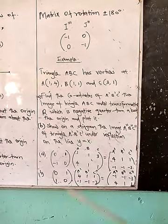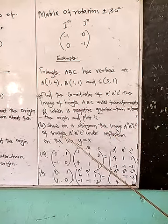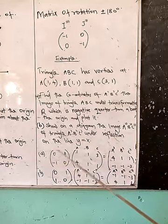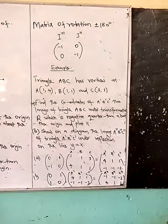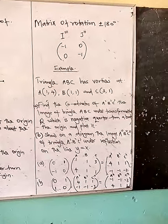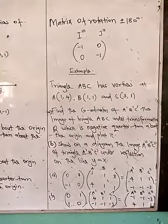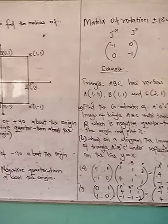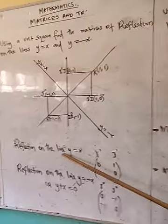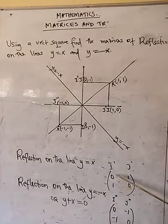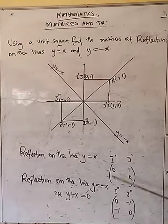Part B: show on the diagram the image A'', B'', C'' of triangle A'B'C' under a reflection on the line y = x. Using the unit square, the matrix that represents a reflection on the line y = x is the matrix [0, 1; 1, 0]. We use the unit square to derive that matrix.